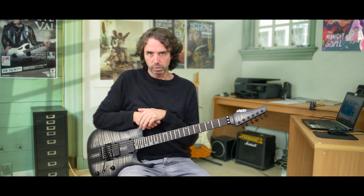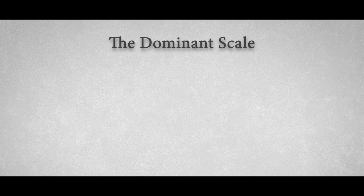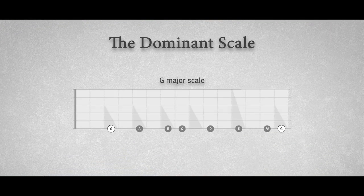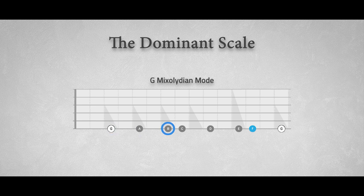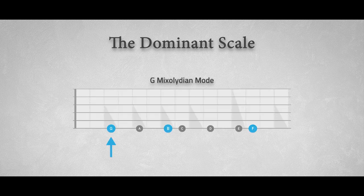Now, to understand what an altered scale is, you first have to understand what the dominant scale is. A straightforward dominant scale is a major scale with a flat 7 degree, and is also known as the Mixolydian mode — it's the fifth mode of the major scale. This scale is outlined and defined by the tonic, the major third, and the minor seventh.